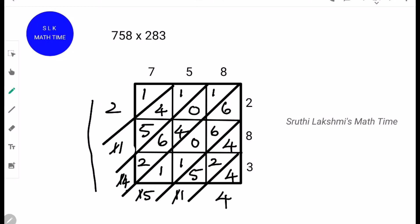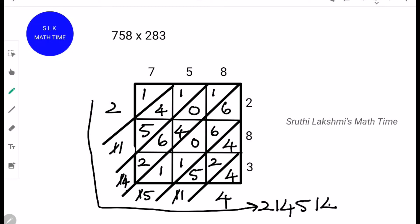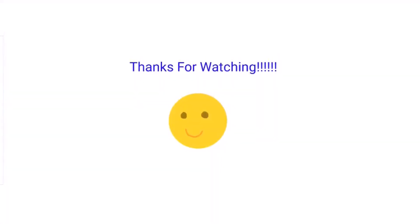So this is our answer: 2, 1, 4, 5, 1, 4. So 758 into 283 is 214514. Thanks for watching.